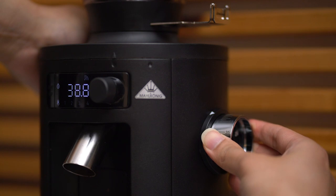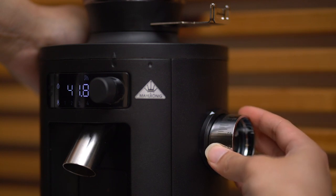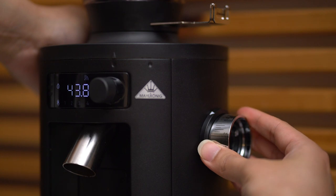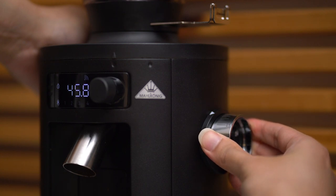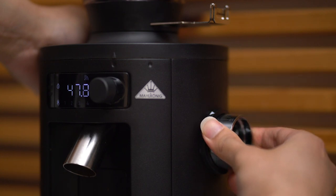To make the finest setting even finer I have to turn the knob clockwise just a little bit. Pushing it back in and setting it to the finest setting again. And that's how to adjust the minimum grind setting.